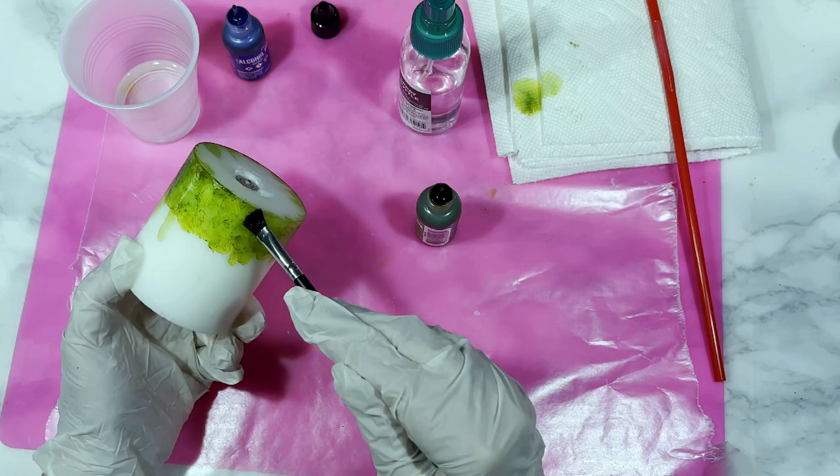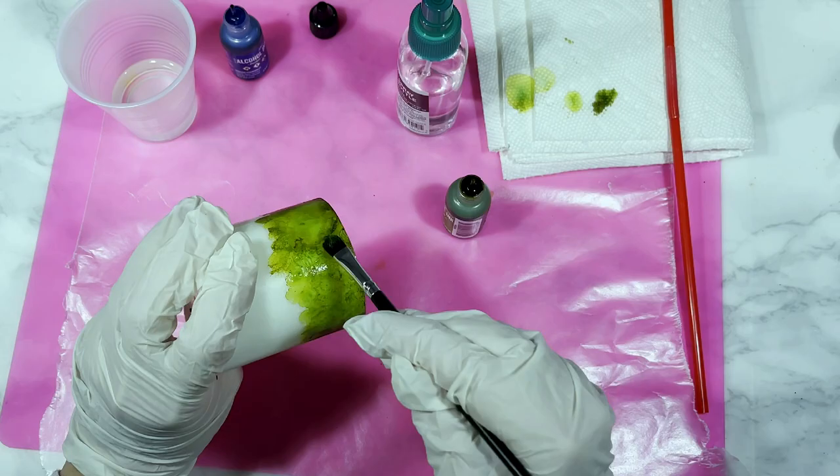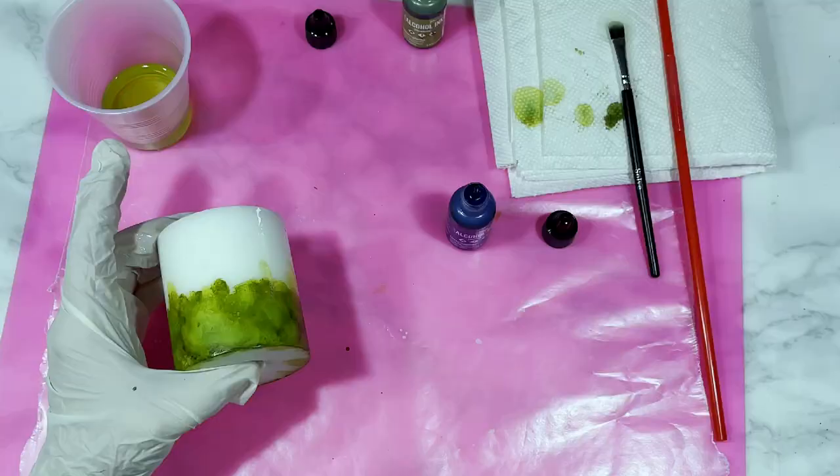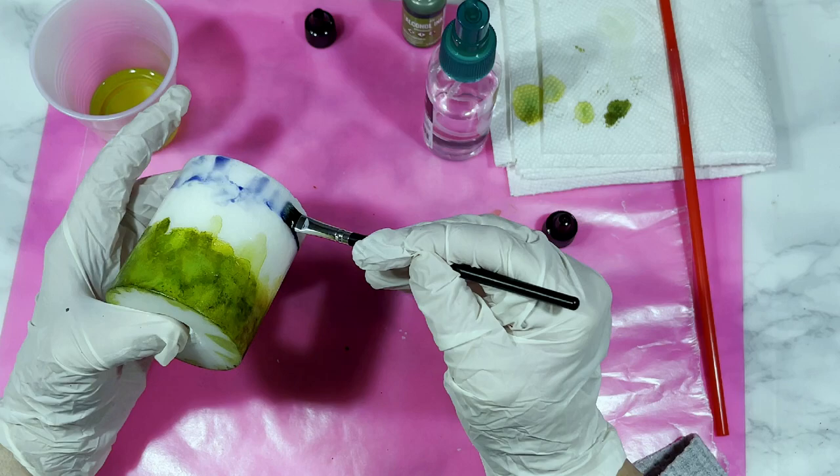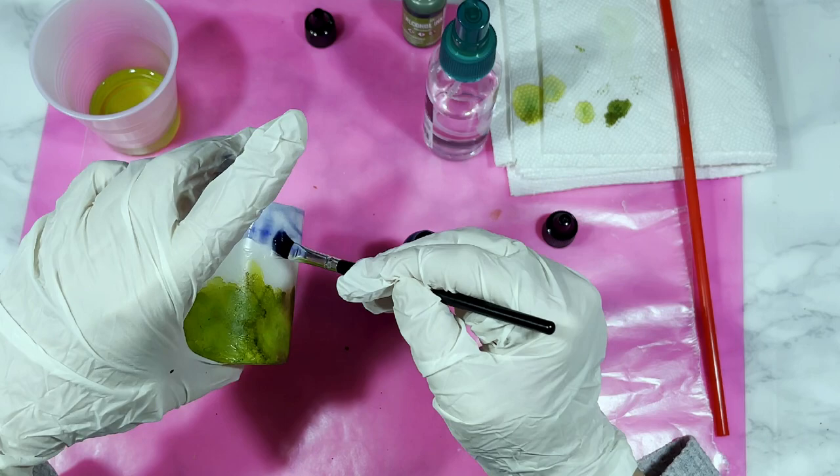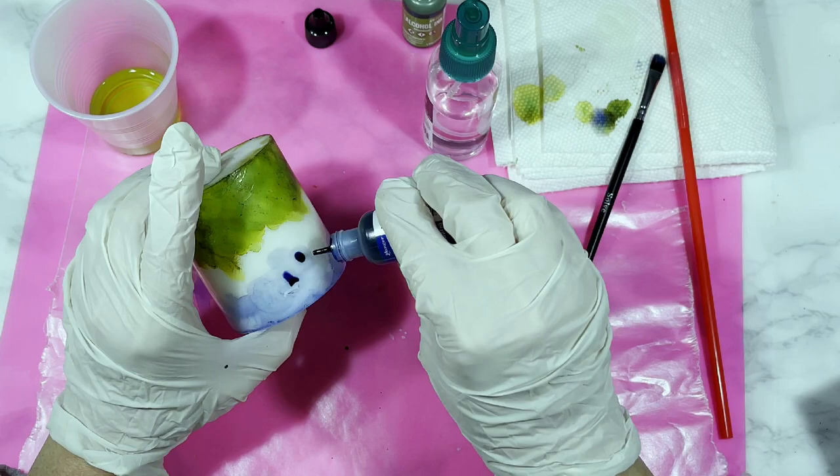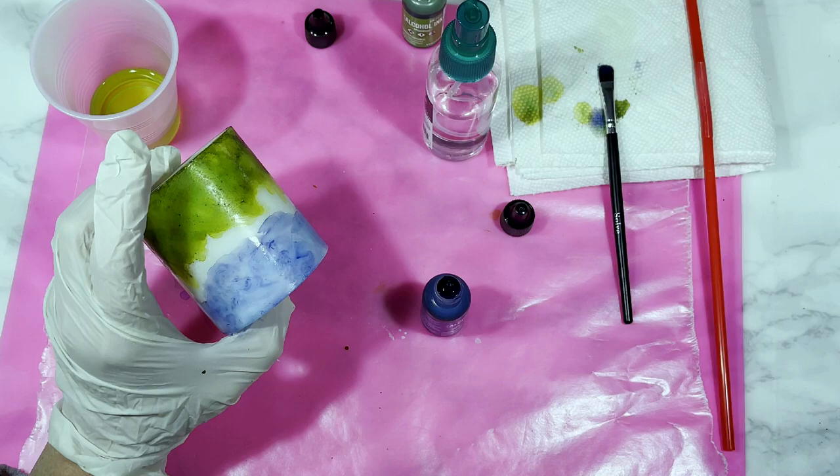Every time you use these inks be prepared to experiment a little bit because you never know what artsy looks you'll be able to achieve. I sprayed some alcohol into the top part of that candle just to wet it down and to make that next color move around a little bit when I apply it. We're using the denim blue color next and I applied that to the top of the candle moving it all around with my brush and my intention was to have these two colors start to meet up in the middle creating sort of a little ombre effect.